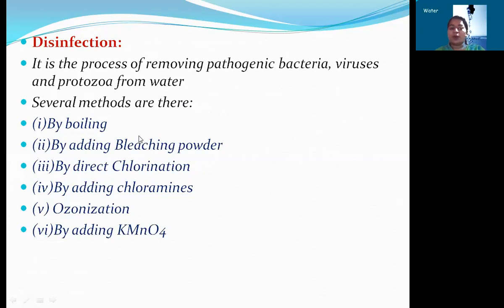So first, what is boiling? When we boil the water at 100 degrees centigrade, all the microorganisms will be killed, and then we will get water which is free from microorganisms. Next, by adding bleaching powder — when we add the bleaching powder to the water, it kills all the harmful bacteria from the water.